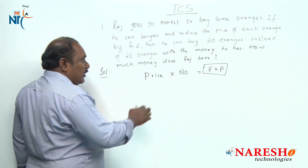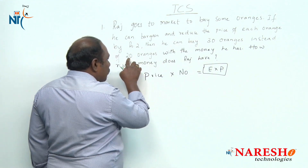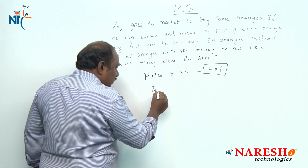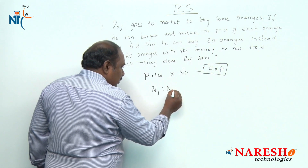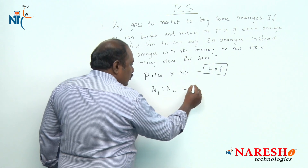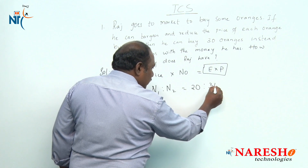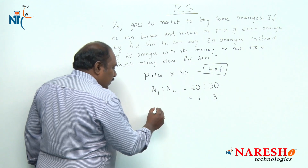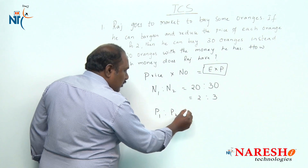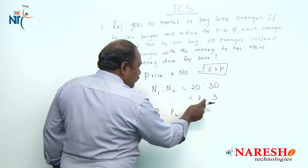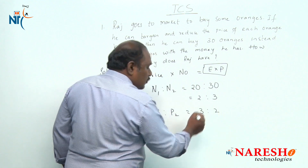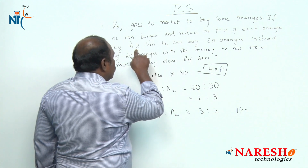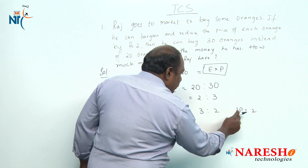Looking here: initially he is able to buy 20 oranges, later on he is able to buy 30 oranges. So the number of oranges initially and later on should be in the ratio of 20 is to 30, which is 2 is to 3. Then what should be the price of each orange? The price of each orange should be in the ratio of 3 is to 2. The difference between 3 and 2 is 1 part, which should be equal to 2 rupees.